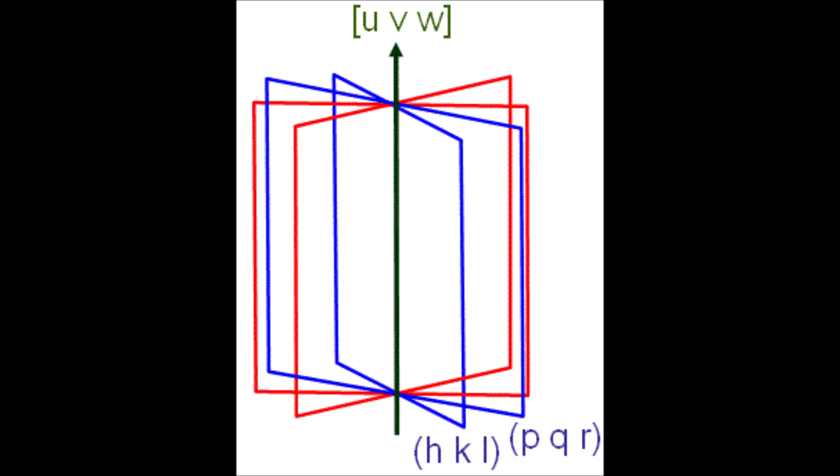But this direction is contained in all four of these planes. And of course this schematic only shows four unique planes and the common zone axis between them, but in reality a single zone axis can contain an infinite number of unique crystallographic planes.